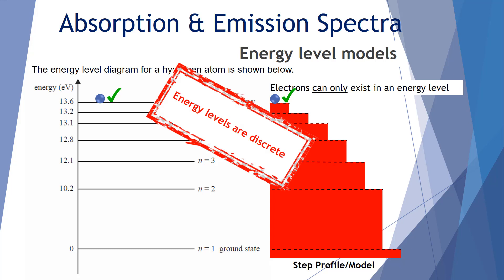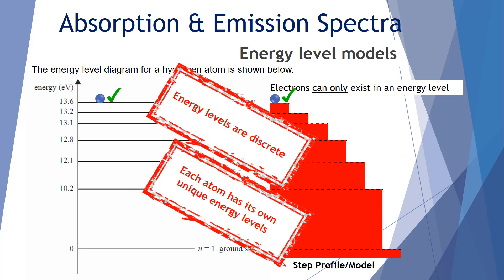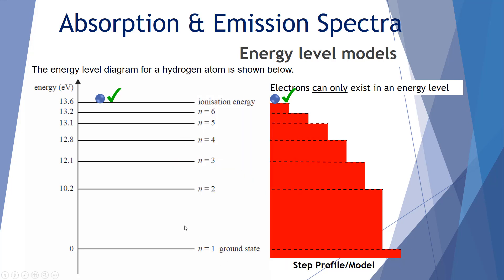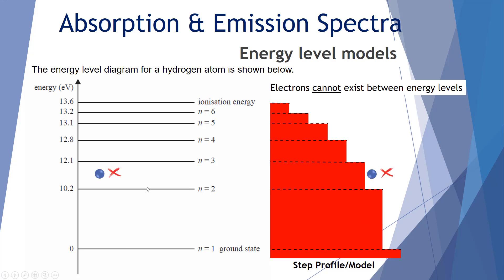It's important that these energy levels are discrete — they are particular values. Accordingly, each atom has its own unique energy levels; what we have here is unique to hydrogen. Electrons cannot exist between energy levels. You don't find an electron just hovering between the ground state and the first excited state — it physically doesn't exist. Likewise, you don't find electrons between n equals 3 and n equals 2, or n equals 4 and n equals 3.